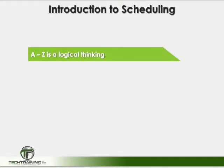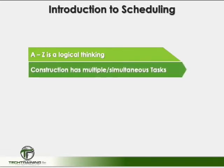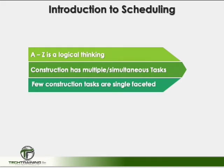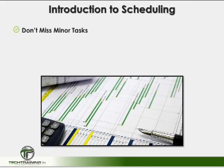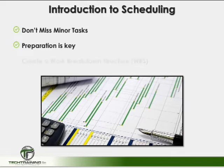Now let's talk about the nitty-gritty. When using any of these schedules, it is logical for a constructor to think A to Z — it makes sense, it's logical, it's easy to follow — and it's also a mistake. Most construction projects consist of a lot more than a single task, and even when working on a single task, there are other tasks that can be running concurrently. The schedule must be completed without leaving out any major or minor tasks, and the best way to guarantee this is to prepare the schedule in a systematic manner using a work breakdown structure, or WBS.